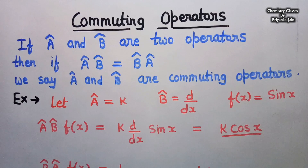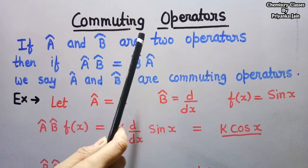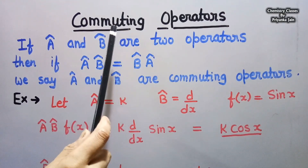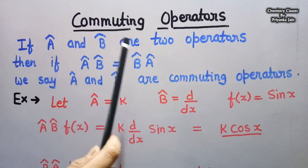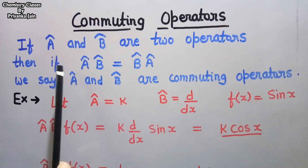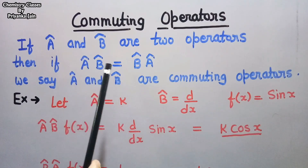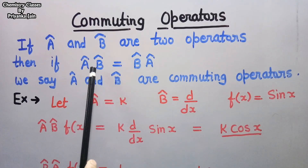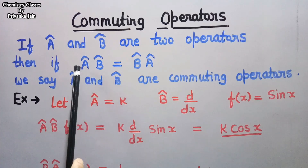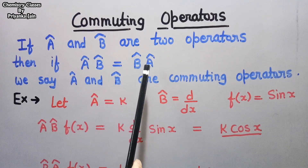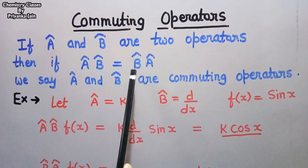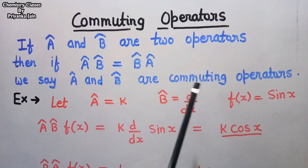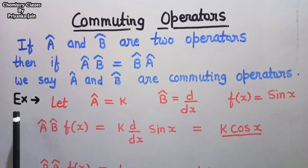The important type of operator is the commuting operator, and several questions come related to this type. What are commuting operators? If A and B are two operators and the condition is that AB = BA — meaning when we apply B on the function first and then apply A, it is equal to when we apply A first and then B — then we say these two operators are commuting operators.